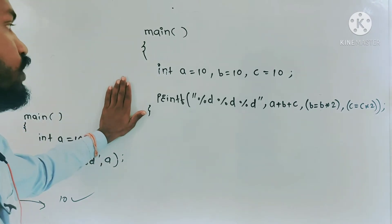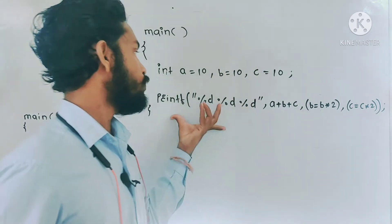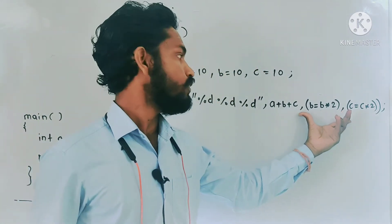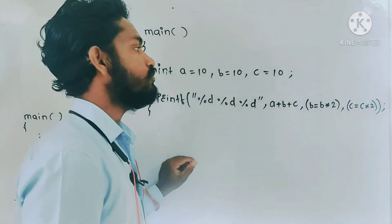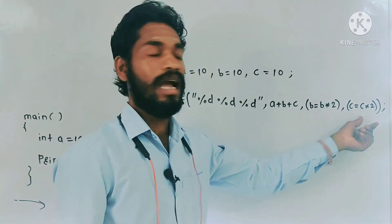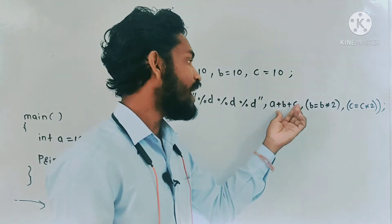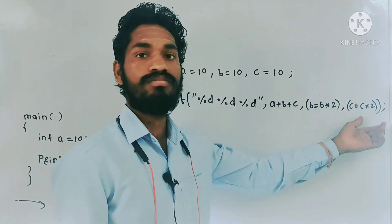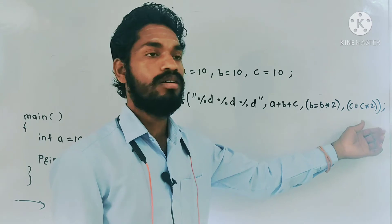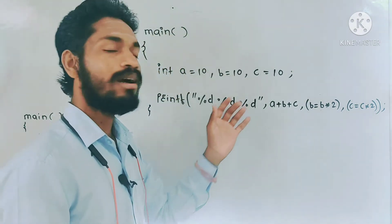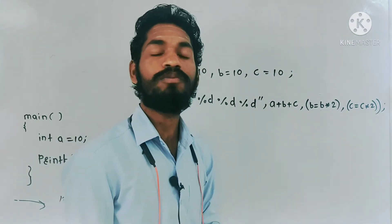In these questions, I have taken three variables and I am trying to print the data, but I have given different expressions inside the printf function. I haven't printed a, b, and c directly — I'm doing some operations inside the printf function. The first question itself is: can we pass expressions inside the printf function? This code will compile properly because we can pass expressions in printf functions — it will not generate any error.